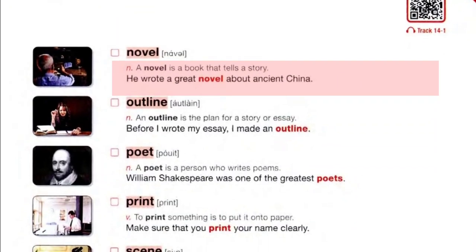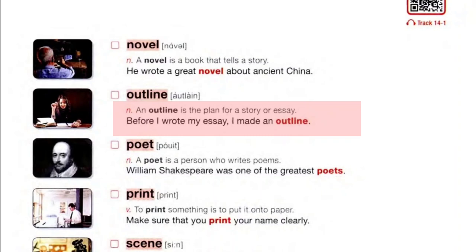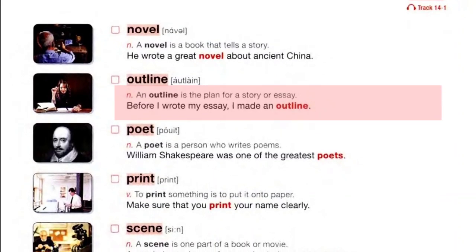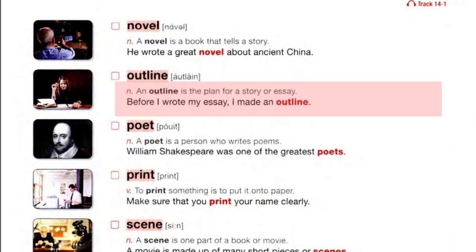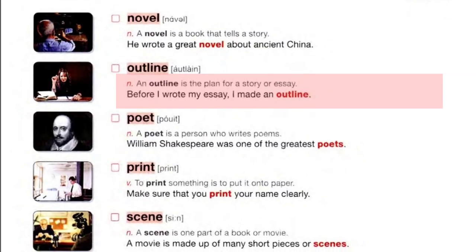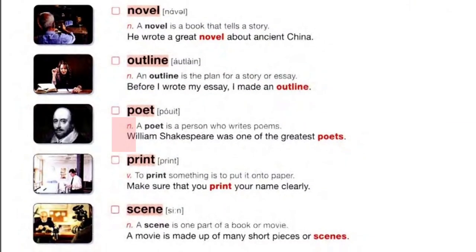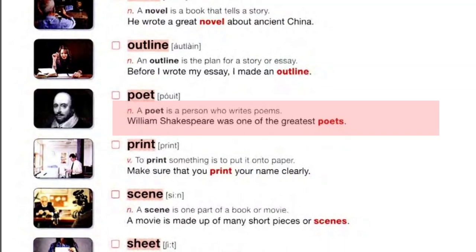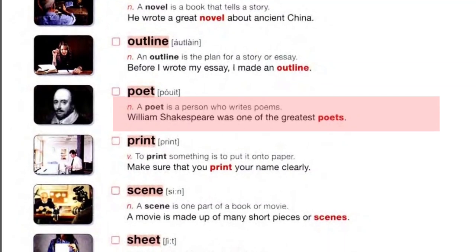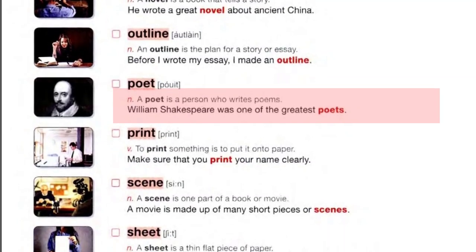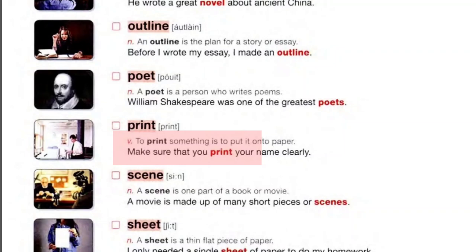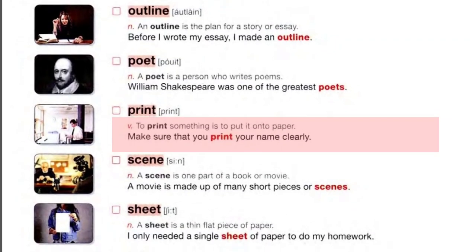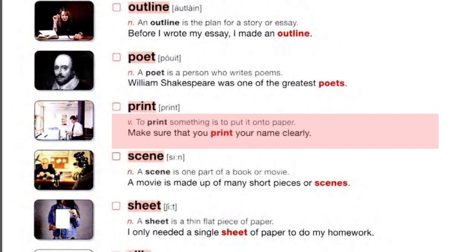Novel: a novel is a book that tells a story. He wrote a great novel about ancient China. Outline: an outline is the plan for a story or essay. Before I wrote my essay, I made an outline. Poet: a poet is a person who writes poems. William Shakespeare was one of the greatest poets.